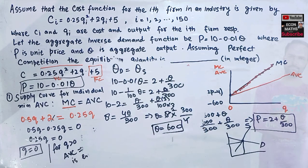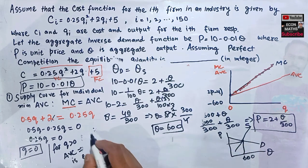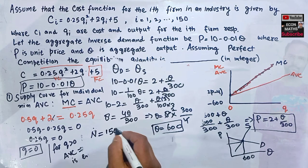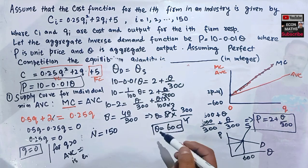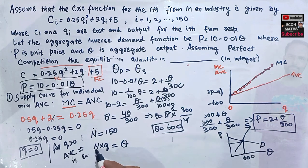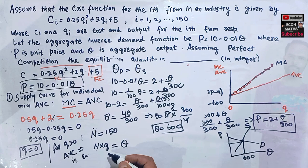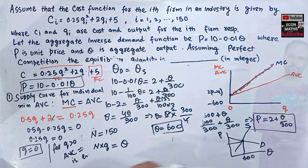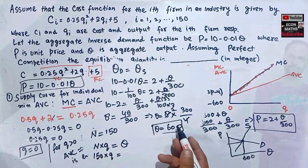So the equilibrium quantity Q = 600. This means total quantity transacted in the industry is 600. We have 150 firms, so: 150 × q = 600, where small q is the quantity supplied by one individual firm.